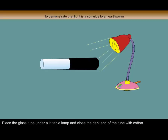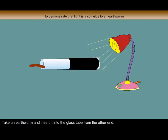Place the glass tube under a lit table lamp and close the dark end of the tube with cotton. Take an earthworm and insert it into the glass tube from the other end.